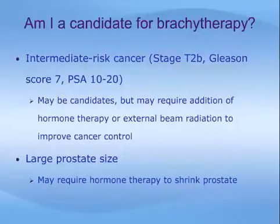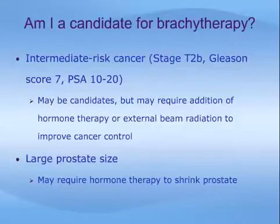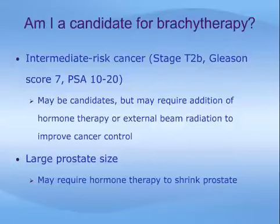Patients with intermediate risk cancer — meaning clinical stage T2B, Gleason score 7, or PSA 10 to 20 — may still be candidates for brachytherapy, but may require additional treatment with hormone therapy or external beam radiation to improve cancer control. Patients with larger prostates may also be candidates, but might require hormone therapy to shrink the prostate prior to treatment.